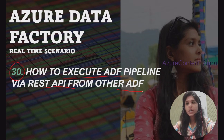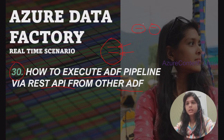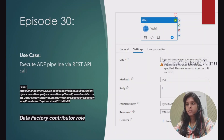In the previous video, we achieved a similar requirement, but in that case both pipelines were in the same Azure Data Factory — the pipeline we need to execute and the pipeline from where we are sending the REST API call. But now our requirement is we have the pipeline in one ADF and we need to send the REST API call from another ADF. We will see how to achieve this in this video.